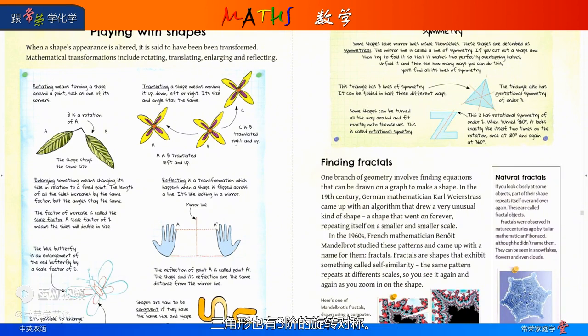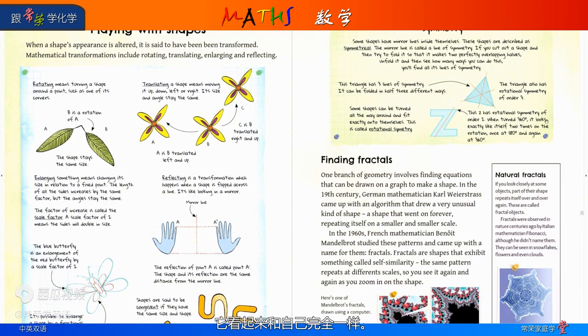The triangle also has a rotational symmetry of order 3. Some shapes can be turned all the way around and fit exactly onto themselves. This is called rotational symmetry. This Z has rotational symmetry of order 2. When turned 360 degrees, it looks exactly like itself two times on the rotation. Once at 180 degrees and again at 360 degrees.